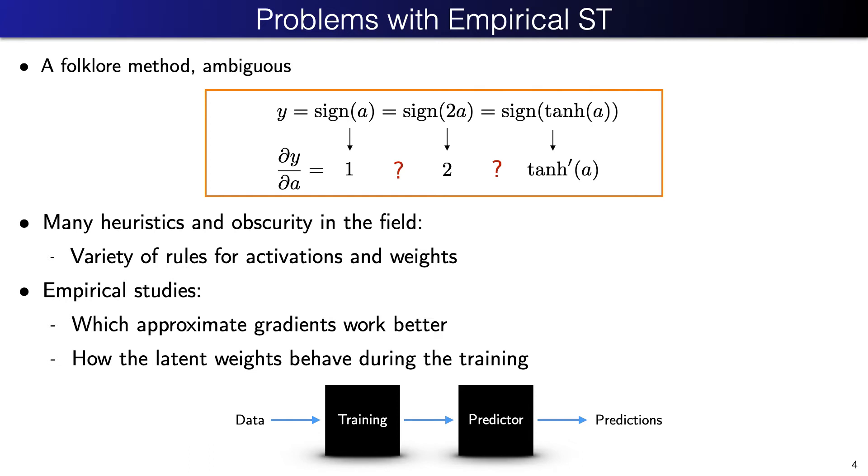One can say that modern deep learning is in general rather empirical. Well, learning binary neural networks, in my opinion, is on extreme empirical edge. There are many works demonstrating successful results, but all reasoning is performed intuitively and sometimes in contradiction with the mathematical rationale. There are a variety of backpropagation rules, which are different for activations and weights. There are empirical studies investigating which approximate gradients work better and how the latent weights behave during the training and what is the meaning of the latent weights. I imagine this situation as having two black boxes. One is the neural network itself and the other one is the training method. We thought that we should be able to do better by using a more sound approach.